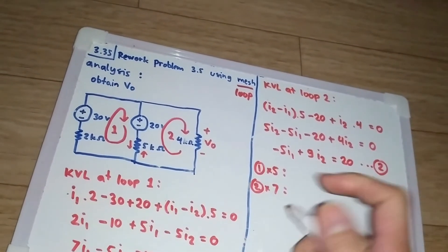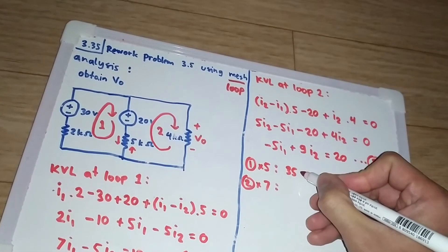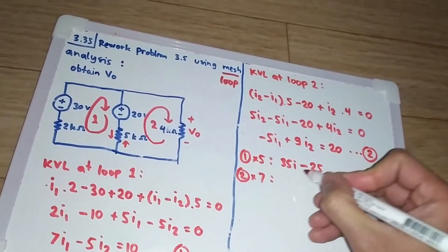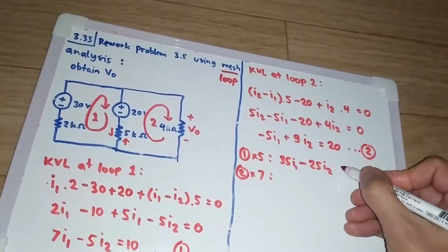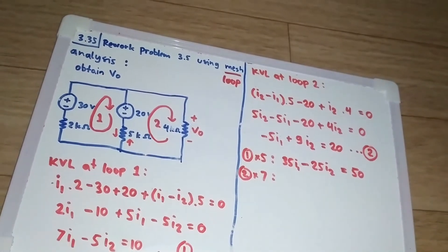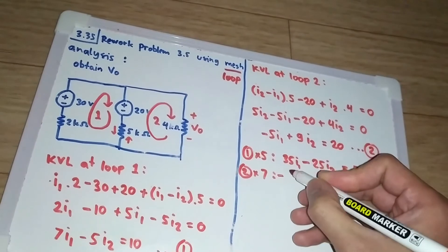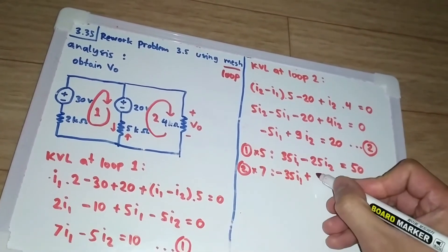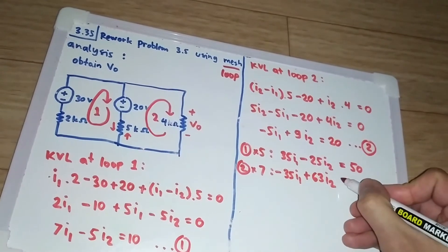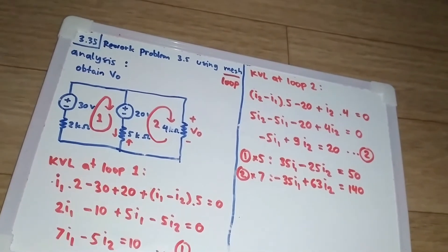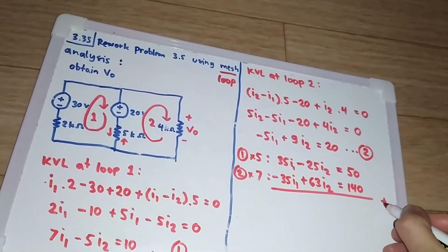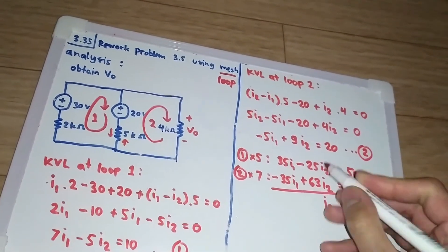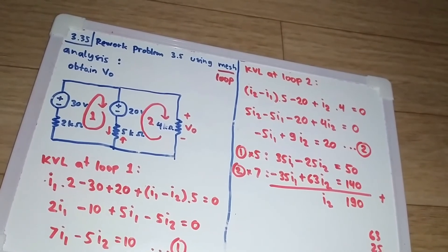Okay, let's do the math. 7 times this is 35 I1 minus 25 I2, and this equals 50. Now we will have minus 35 I1 plus 9 times 7 is 63 I2, and it will equal 140. Now we can sum this one, so we get 190.